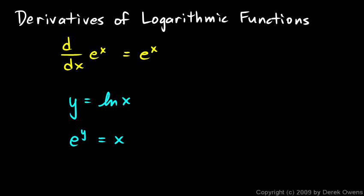I'll take the derivative of the left side and the derivative of the right side, both with respect to x. The derivative of e to the y is e to the y, but since y is a function of x the chain rule shows up — I have to multiply by the derivative of y. So the left side becomes e to the y times dy/dx, and on the right I just have the derivative of x which is one.